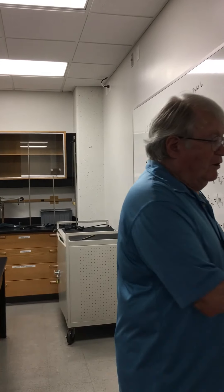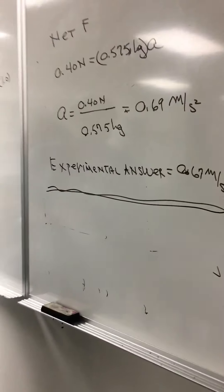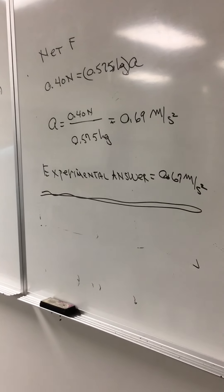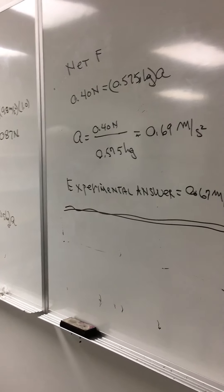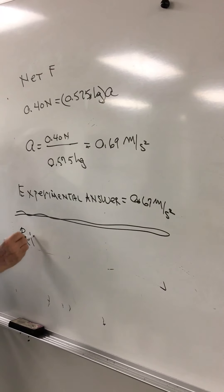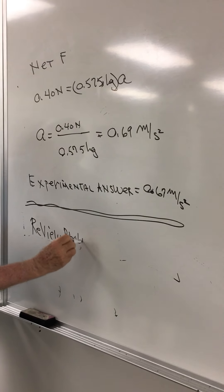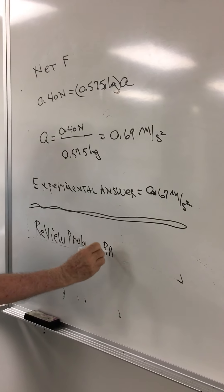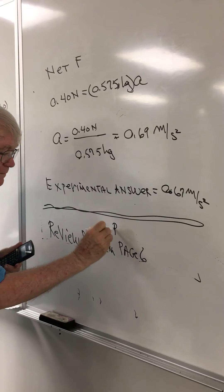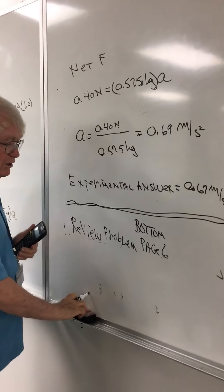Now at the end of this experiment, one of the things you have to do before you submit the experiment, is actually do the review problem on the bottom of page 6. So the review problem is on page 6, the bottom. And that's part of the experiment. So you have to make sure you submit that as well.